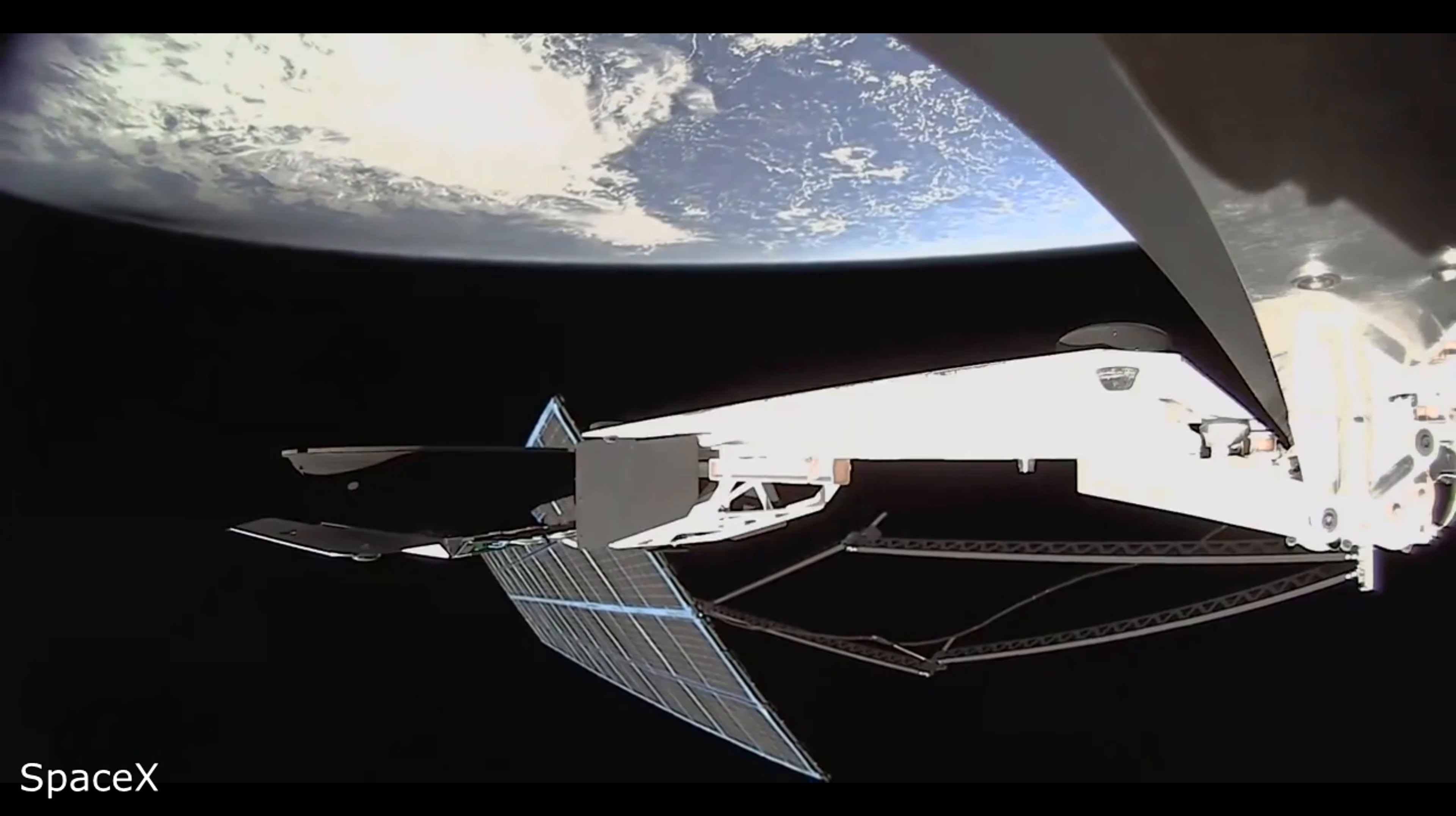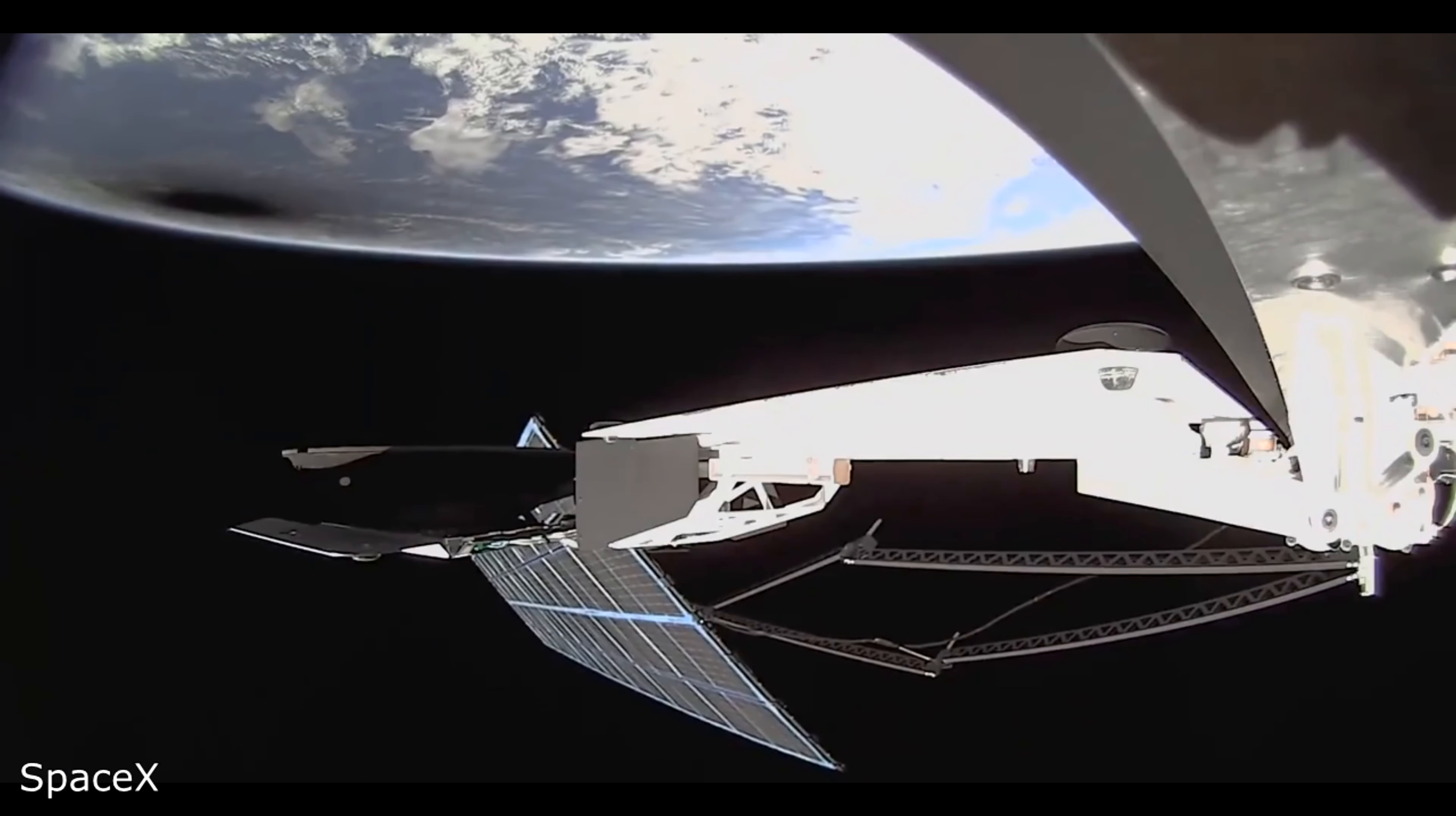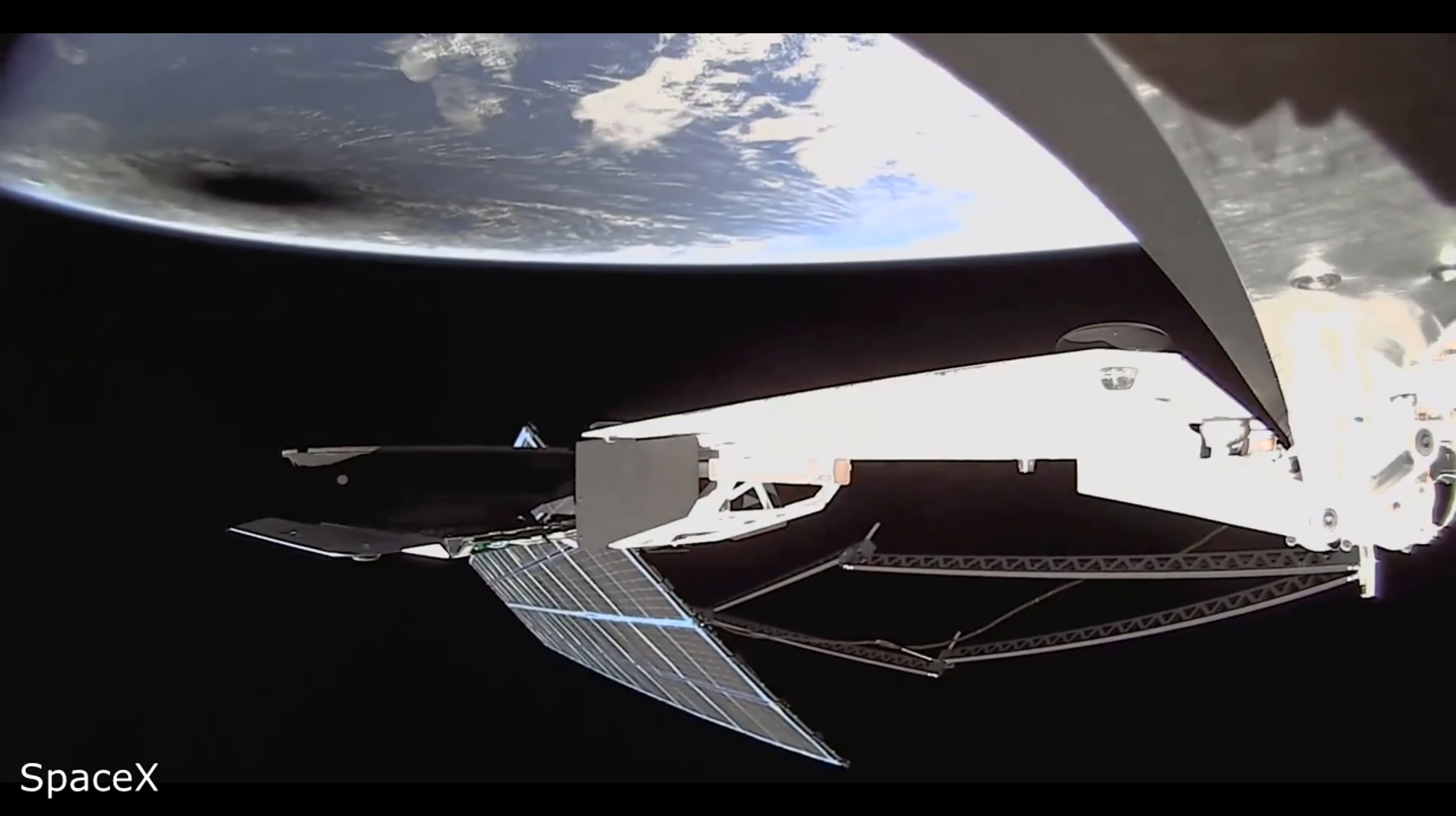This video was captured by a Starlink satellite on April 8th, 2024, during the solar eclipse. You can clearly see the moon's shadow on the Earth.